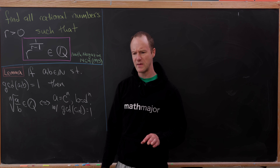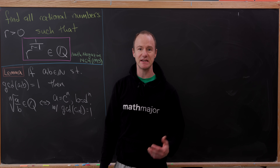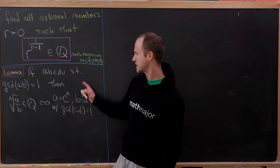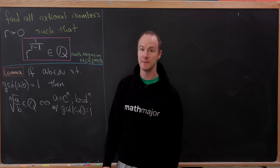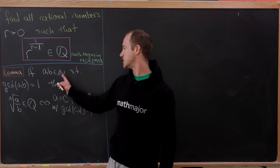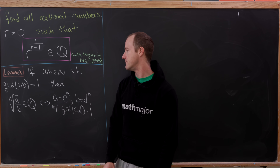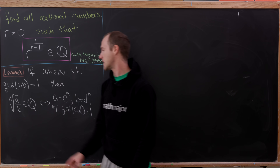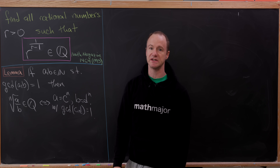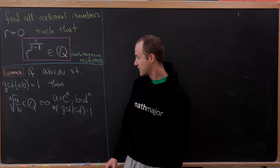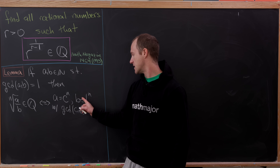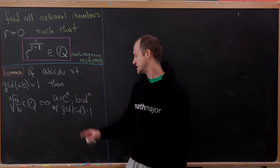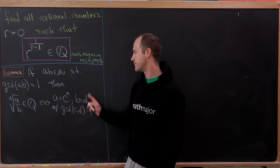In order to make this as transparent as possible, we're going to start with the following lemma. It says if we have two relatively prime natural numbers, then the nth root of their quotient is rational if and only if each of them is a perfect nth power, where the bases are also relatively prime.